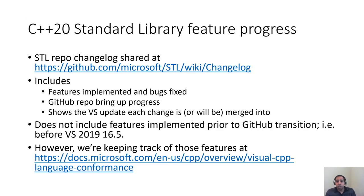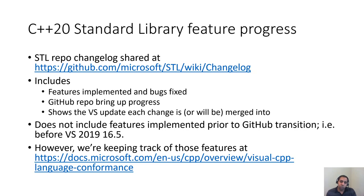To track all the code contributed to the repo, we have created a changelog available at github.com/microsoft/STL/wiki/changelog. The changelog outlines all the features implemented and bugs fixed, and shows the corresponding Visual Studio updates where each feature or bug fix has shipped or is planned to ship. Features implemented prior to open sourcing on GitHub are not included there, but those can be found on docs.microsoft.com.